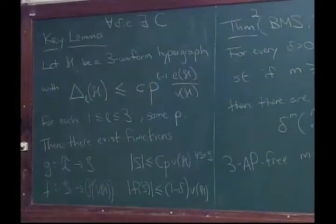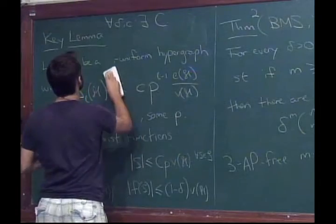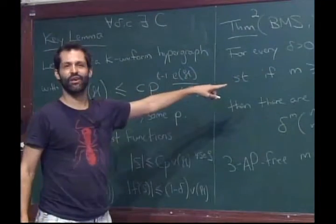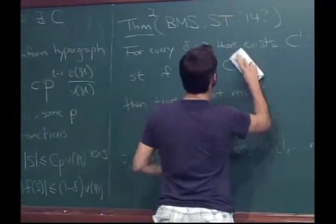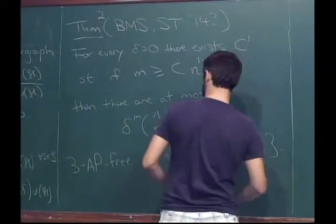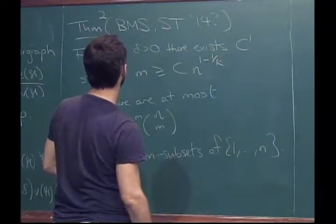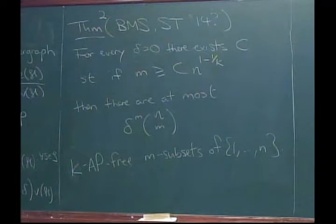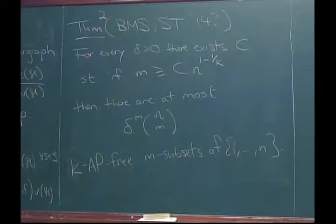Perhaps before proving this key lemma I should use it to prove the theorem — otherwise it seems like magic and unmotivated. Given that we're working in K-uniform generality, the difficult part is proving the lemma; deducing the theorem is relatively easy. So let's do it for K-uniform hypergraphs. If we can prove this for a K-uniform hypergraph — which we will do, maybe next week — then we can prove the theorem for all K.